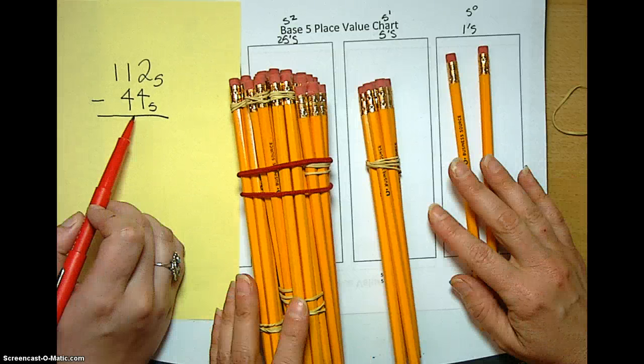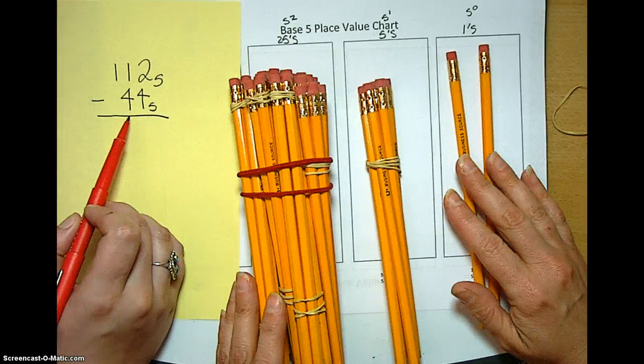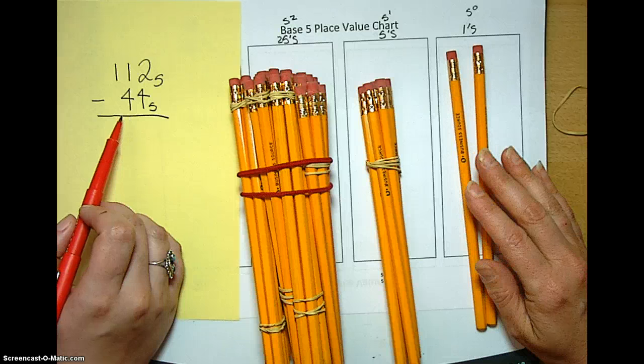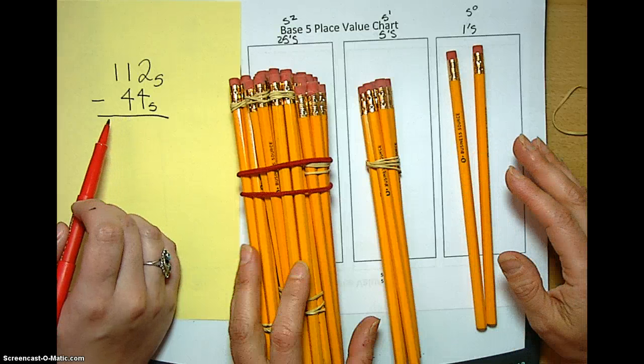Some of you might think, why is there not a 4, 4 on here? Well, because we're going to take it away from the 1, 1, 2. So let's see how we can do this.